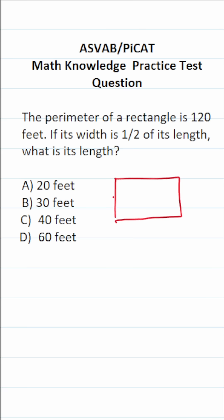In a rectangle, this is the width, and this width is equal to the opposite width. This is the length, and this length is equal to the opposite length. How do you find the perimeter of a rectangle? You simply add up all of its sides.